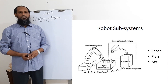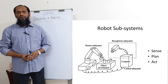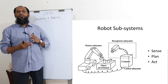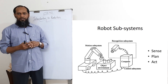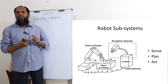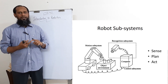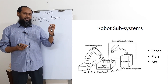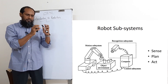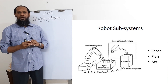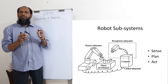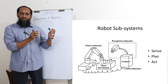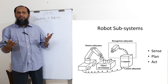Welcome back. We are going to discuss three major subsystems of robotics: Sense, Plan, and Act. Looking at the picture, one camera is recognizing the world or some objects, and then a computer is making a decision — which is the Plan subsystem — determining which object to pick or which task needs to be performed.